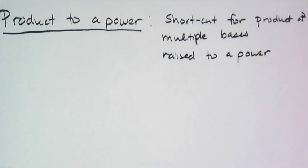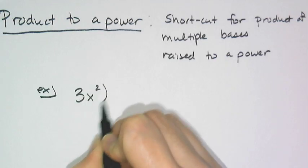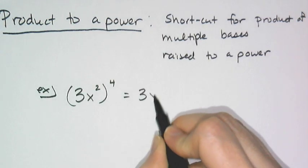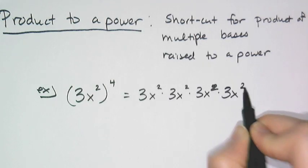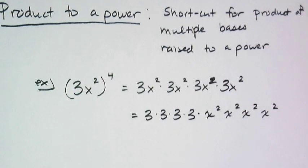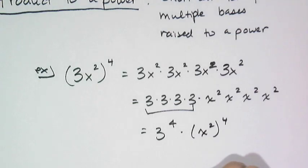Now we're going to look at the product to a power rule, which is a shortcut for a product of multiple bases raised to a power. By definition, let's simplify 3x squared raised to the 4th power. This means I take 3x squared and multiply it by itself 4 times. Using the commutative property, I rearrange to see I have 4 threes multiplied together, which is 3 to the 4th, and 4 x-squareds multiplied together, which is x squared raised to the 4th power.